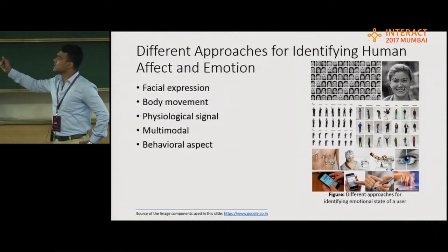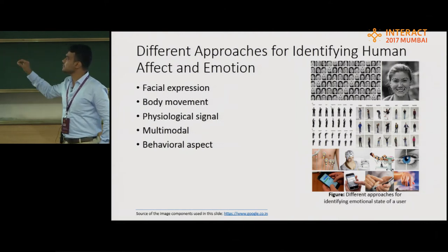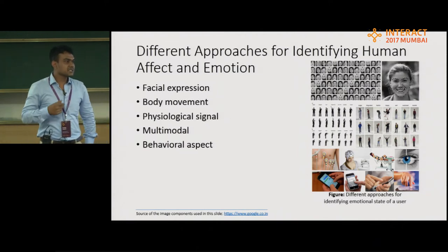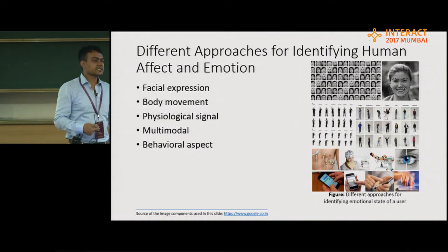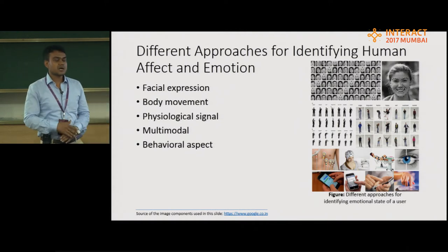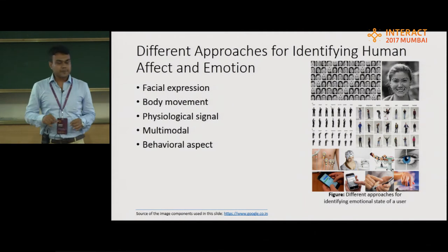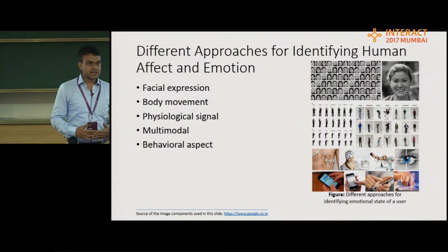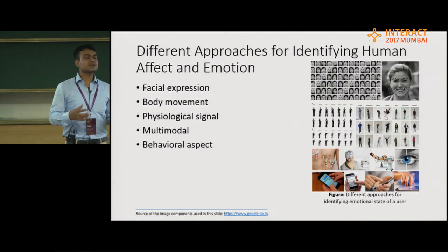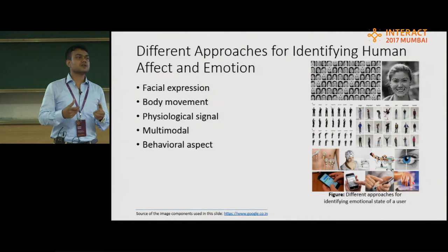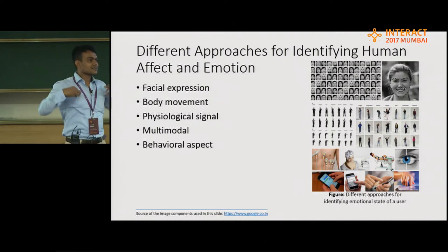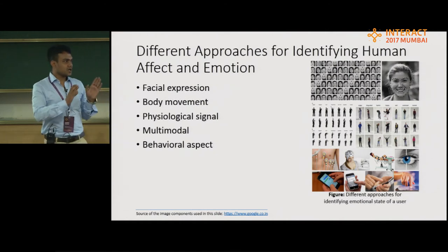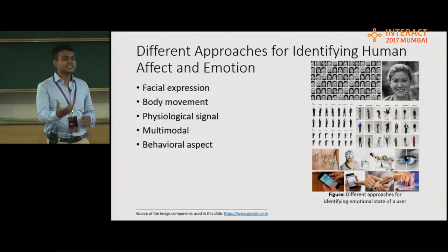The third approach is very well established and accepted: identification of emotional state using physiological signals like EEG, EMG, heart rate, and galvanic skin response. This is a very good approach and we can identify user emotional state very accurately. But imagine if a user is always wearing these devices with wires and probes — this is not at all possible, and it would affect the mobility of the device.